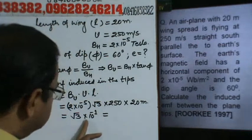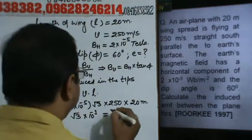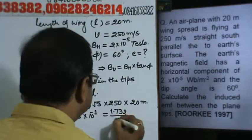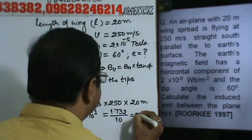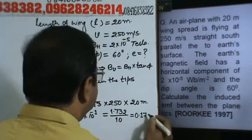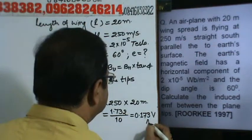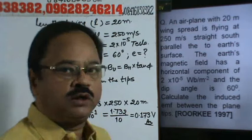Root 3 is 1.732 divided by 10, so this is 1.732 divided by 10, which will be equal to 0.173 volt. This will be the answer. Thank you.